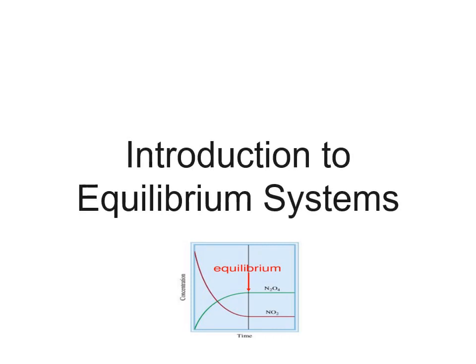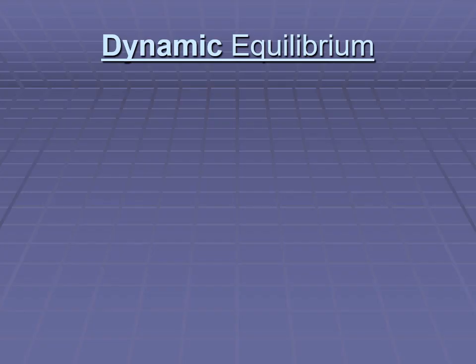Introduction to Equilibrium Systems. We're going to call this equilibrium, but what we really mean is dynamic equilibrium. It looks like nothing is changing, but the reaction is still proceeding. Since the forward reaction and the reverse reaction are happening at the same rate, it looks like nothing's happening. That is what equilibrium is.